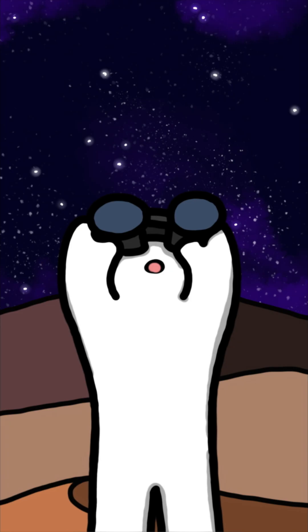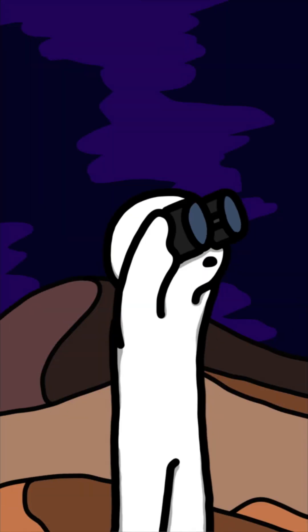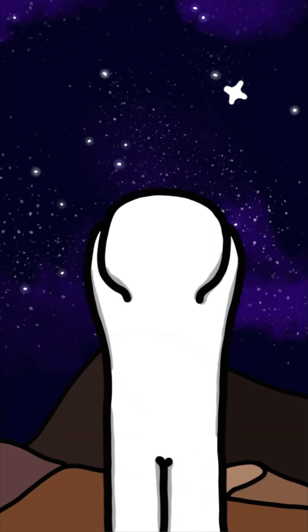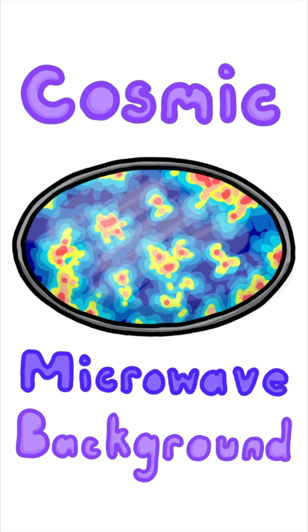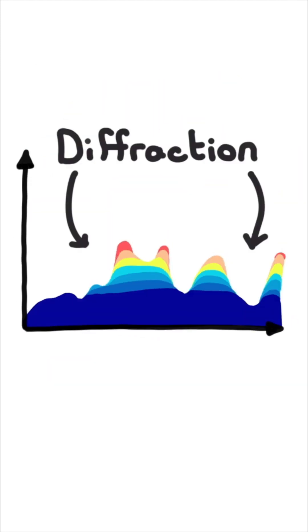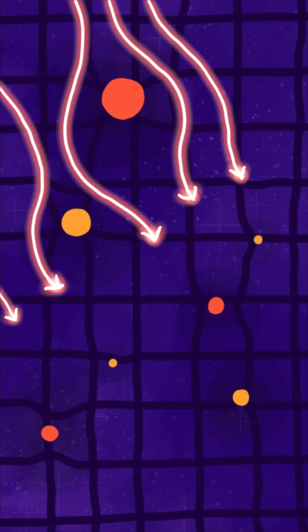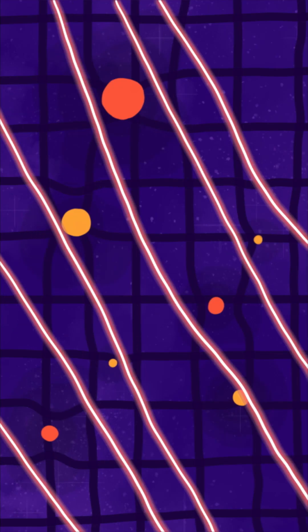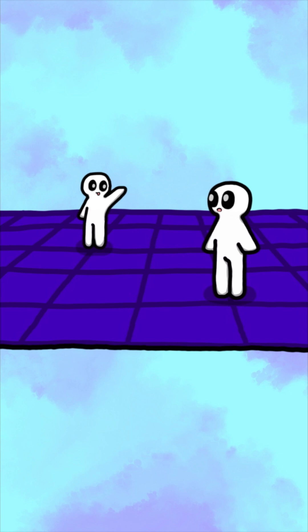Even a single proton more would cause it to curve inward, and any less would make it curve outward. We can calculate density by observing radiation from the Big Bang 46 billion light-years away. Measuring its diffraction through gravitational lensing tells us how dense our universe is.